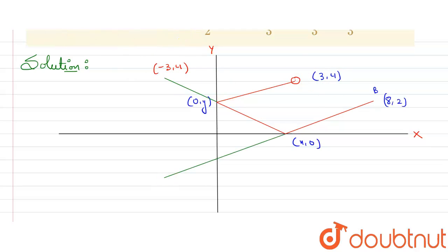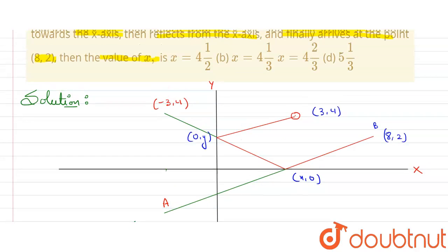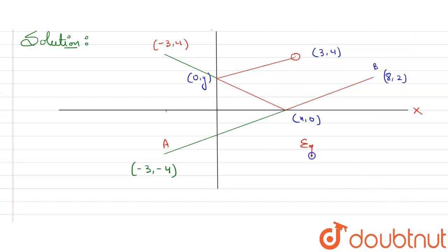Similarly, we can also extend this line. It will be somewhere around like this, and its coordinate will be (8,-2), because here it is in negative coordinate of y-axis. Now consider this point as A. What we need to find is the value of x.